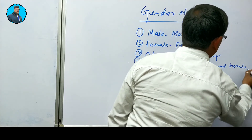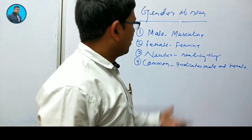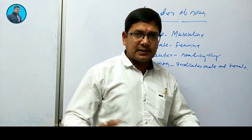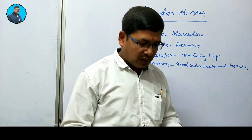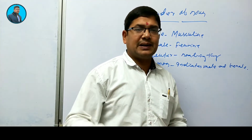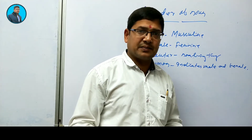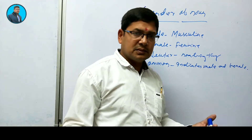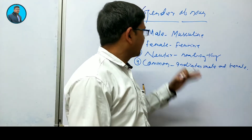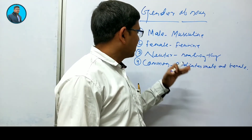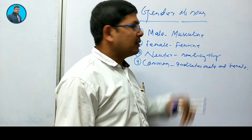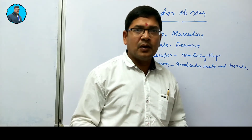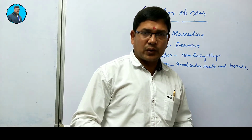So I hope you understood gender in English. As I told you, gender indicates the sex of a noun, through which we can recognize the sex of a noun. Gender in English is divided into four types: male, female, neuter, and common. Male stands for masculine gender — like man, boy, son, father.